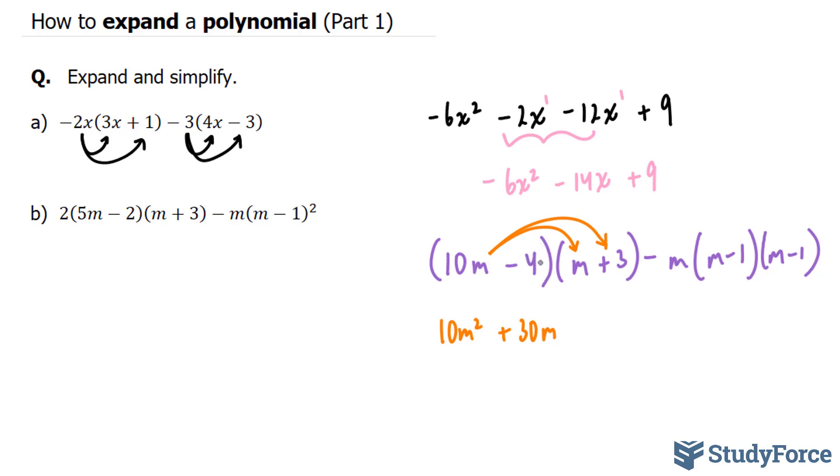Now I'm going to multiply this negative 4 with this m and this negative 4 with this positive 3. Negative 4 times m is negative 4m. Negative 4 times 3 is negative 12.